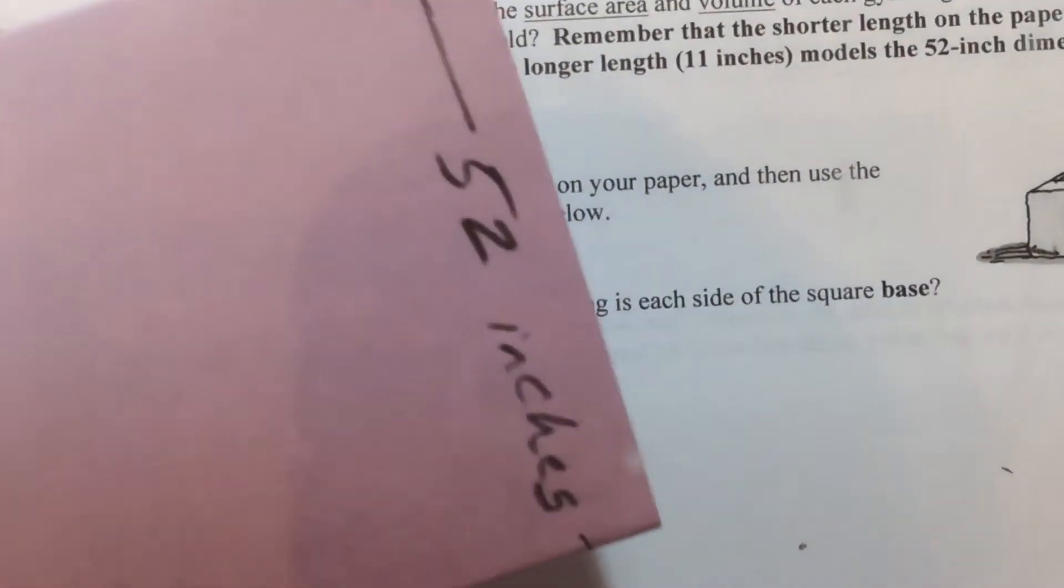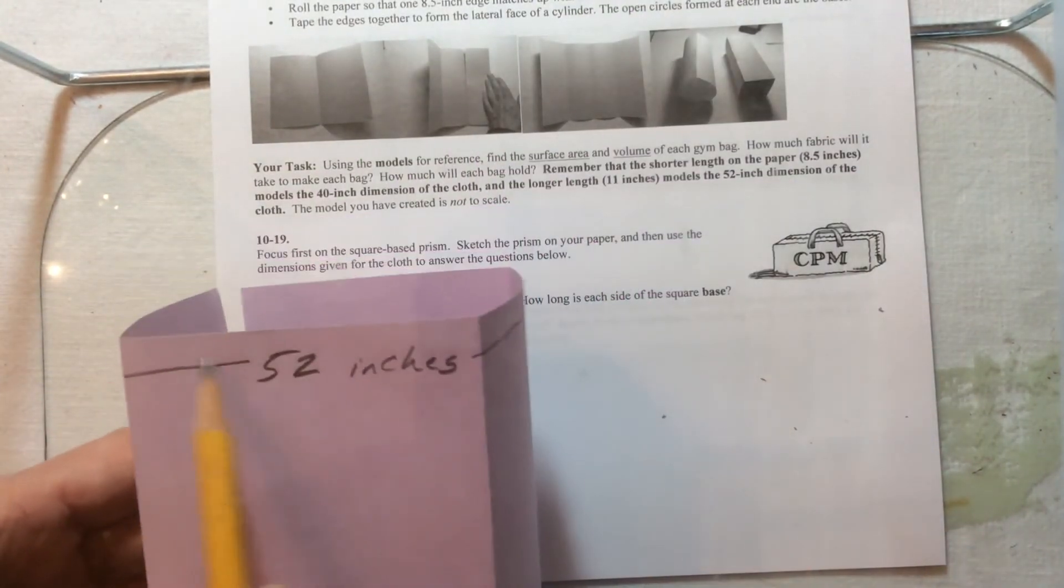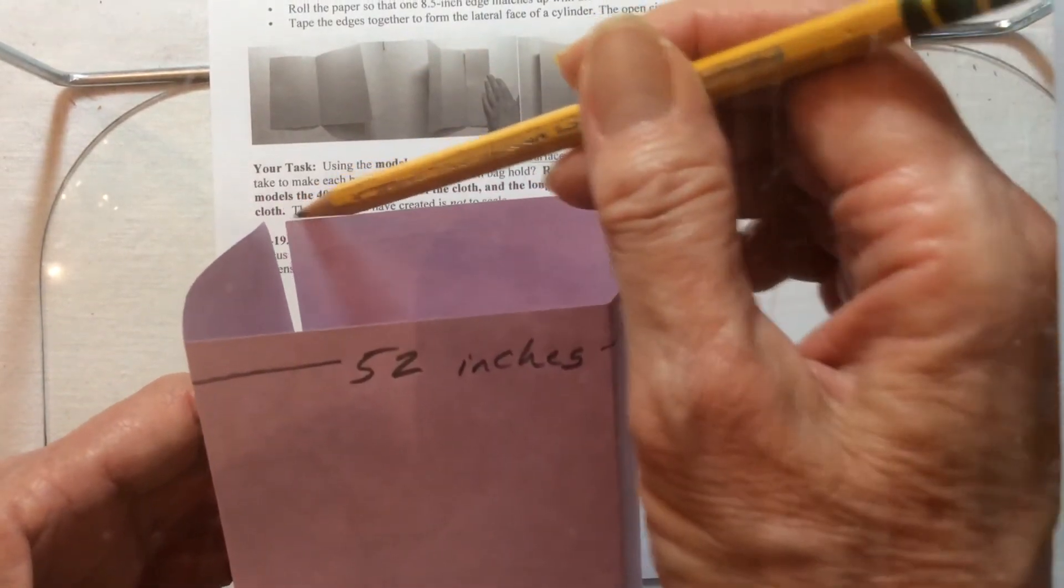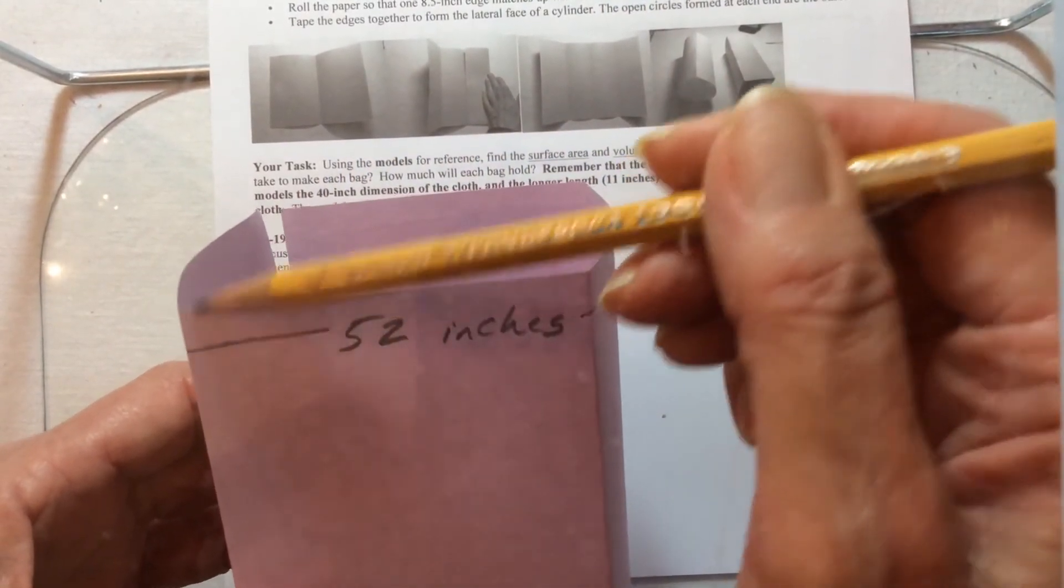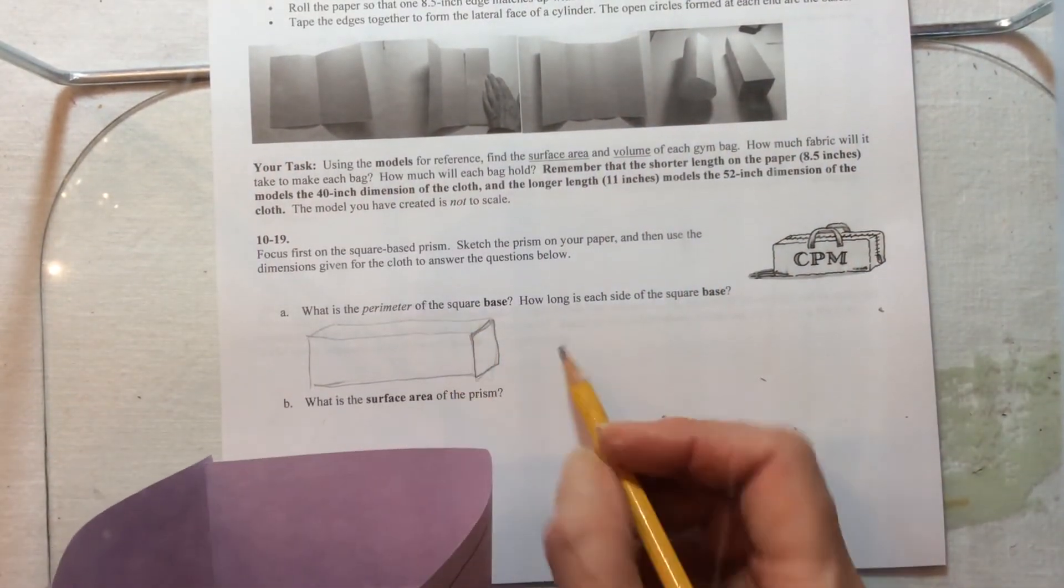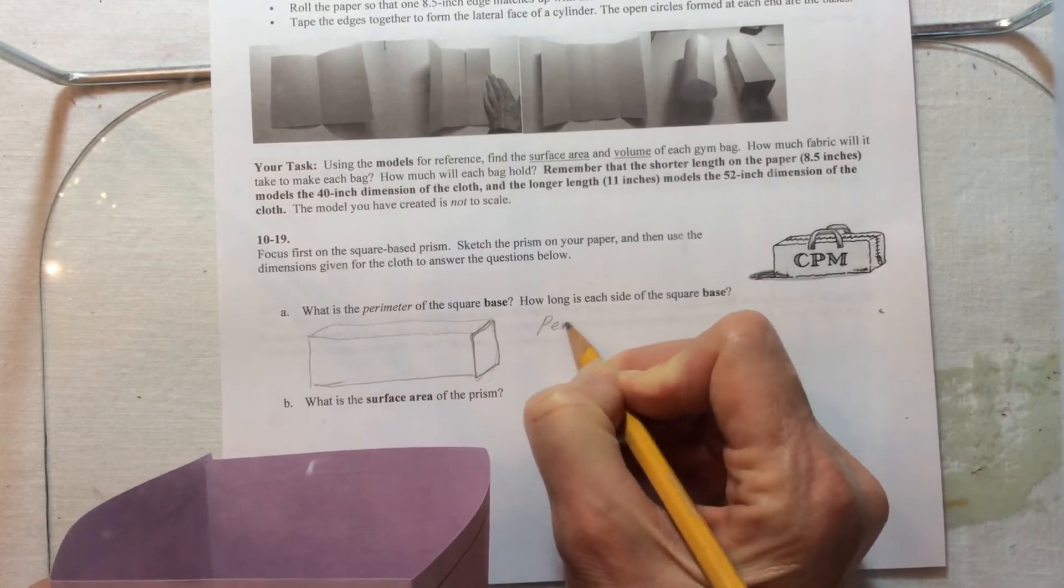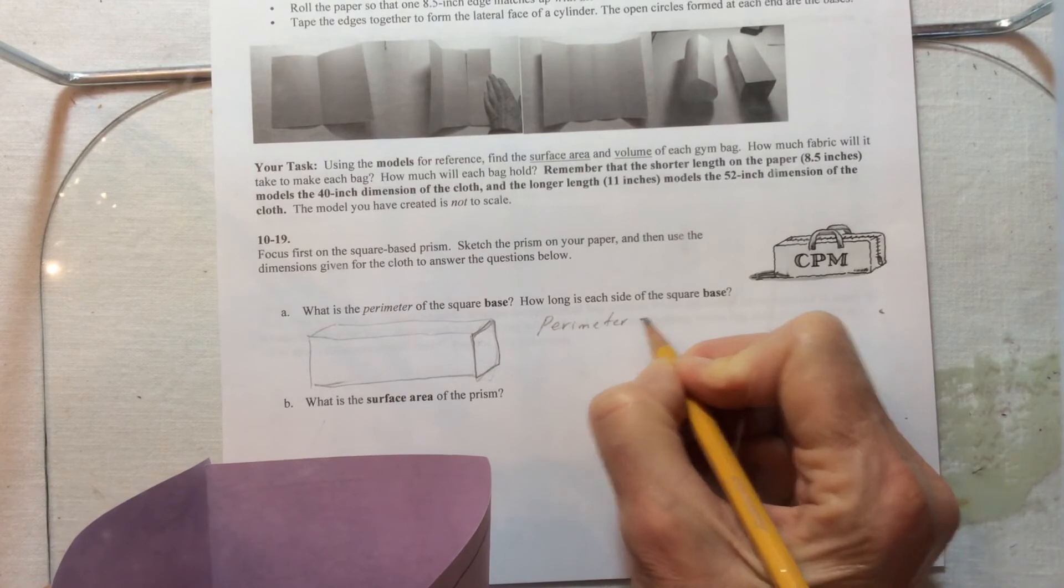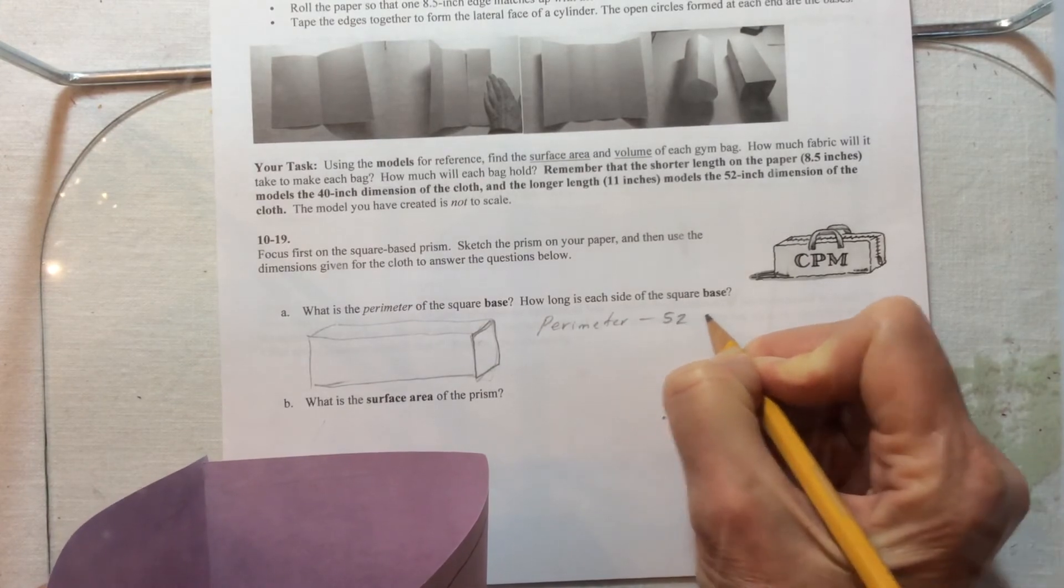If we look back at this model that we made, we know that because this end is 52 inches, this is 52 inches all the way around. So that's pretty easy to say - what is the perimeter of the square base? The perimeter is 52 inches.